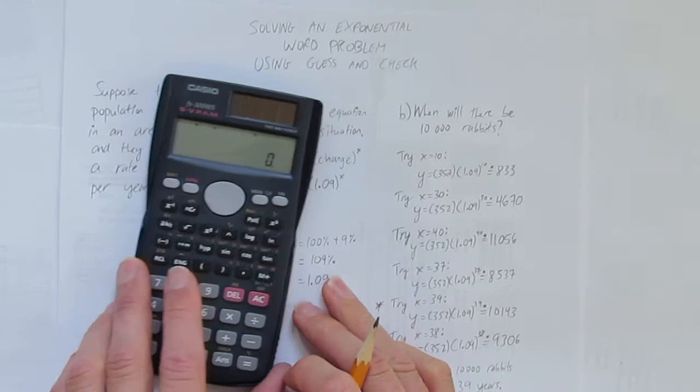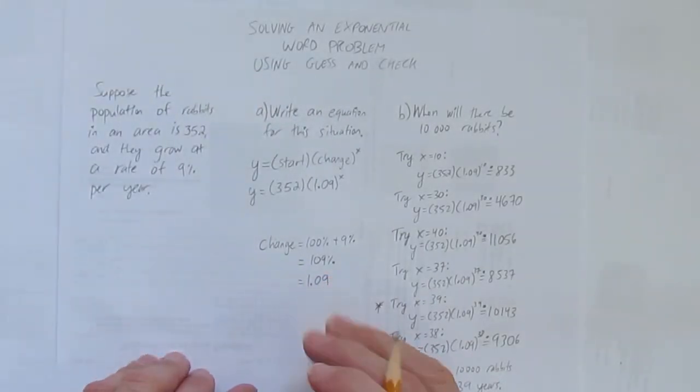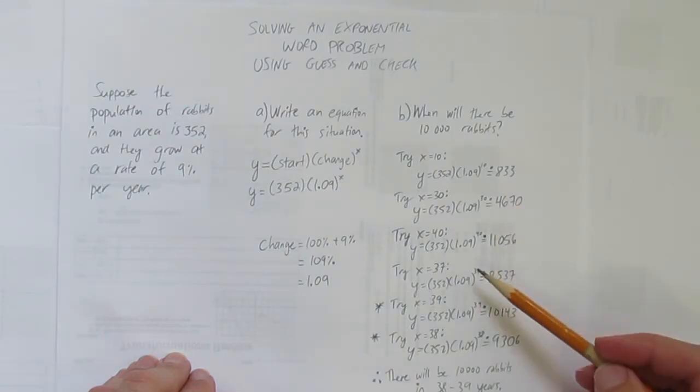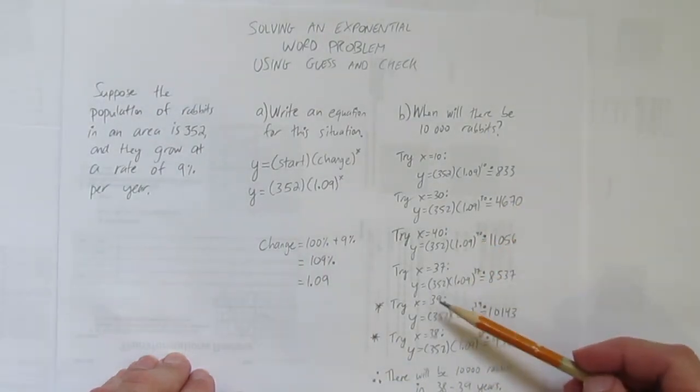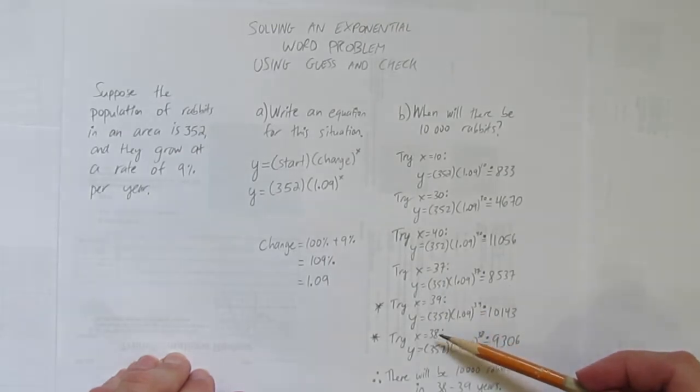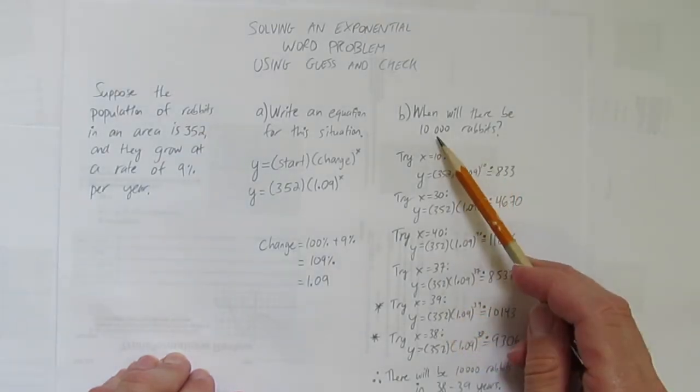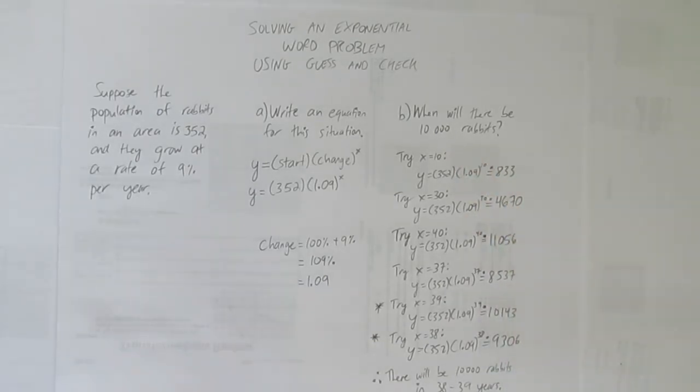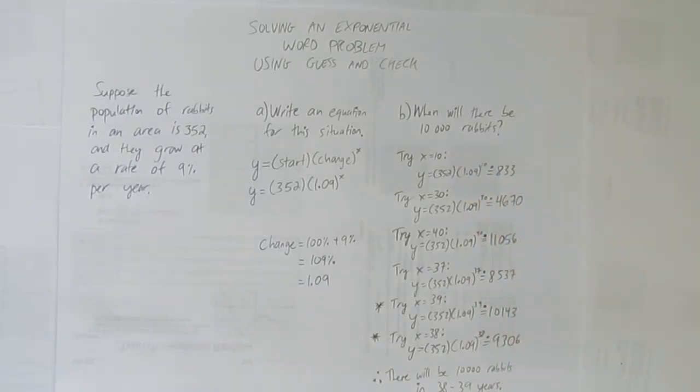We solved an exponential word problem using guess and check. We first wrote an equation for the situation, and then we did guess and check until we got close. You absolutely have to show at least two guesses, the one whole number closest but below, and the other whole number closest but above the target you're looking for. And that's it. Thank you.